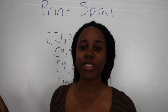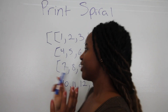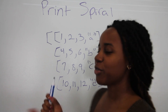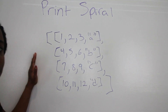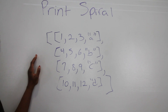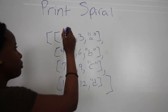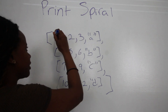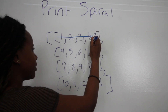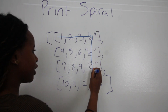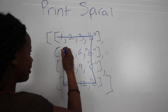Now for the visualization. What are we being asked to do? We're given a 2D array — it's a matrix, it's a grid, whatever you want to call it — and we have to print it out in spiral form. So we're going to iterate through the array and print it out in a spiral.